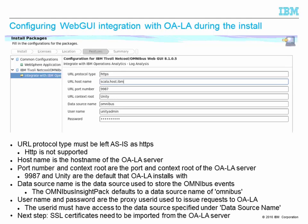The URL protocol type defaults to HTTPS. It must be left as is because HTTPS is the only protocol supported when communicating with LA. The host name is the host name of the LA server. Port number and context route are the port and context route of the LA application. They default to 9987 and unity. So if you're using an out-of-the-box install of LA and haven't modified those parameters, you can leave them as is.